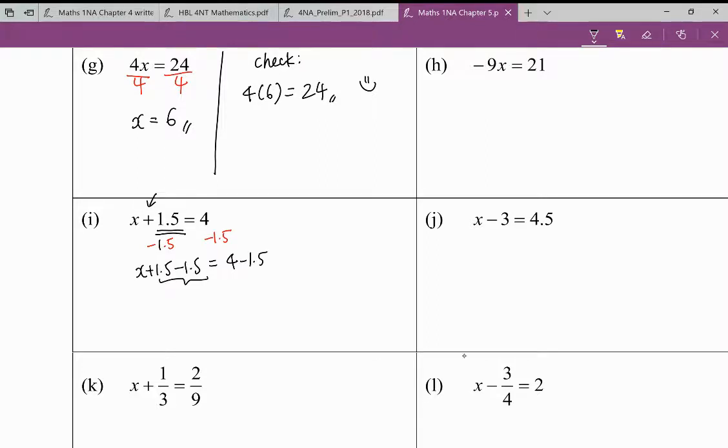So this part here you have successfully eliminated 1.5, you'll get x only. X plus 0 equals to what is 4 minus 1.5, which is 2.5. So x is 2.5.